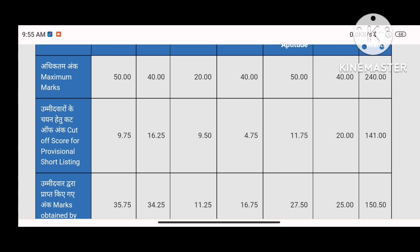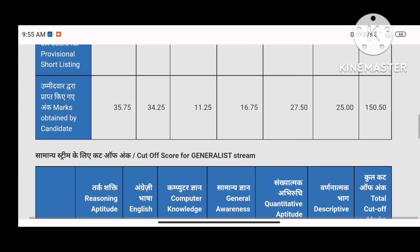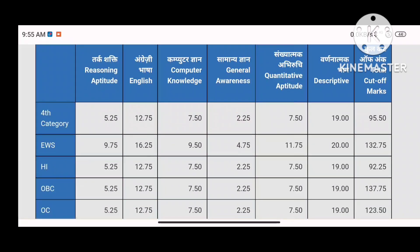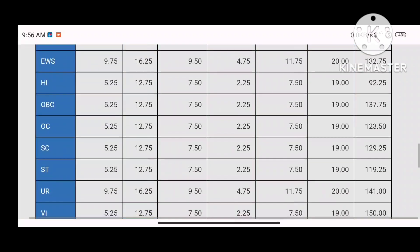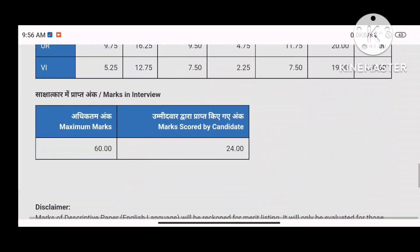Now let's look at the interview section. The interview score is out of 60, making the total 300. The cutoff is around 192, though it has not been officially released. An important prerequisite is that you must get 40% in the interview — if you don't pass the interview, your main marks will have no value. I got 24 out of 60 in the interview.